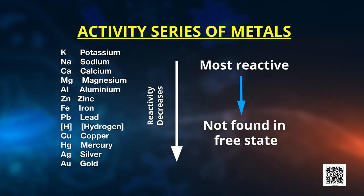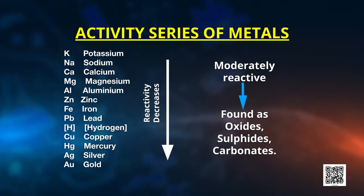But most metals do not occur in their free state. They are very reactive and unstable in their surroundings. They react with other elements to form compounds to attain stability. Copper and silver are also found in combined state as sulphide and oxide ores. The metals at the top of the activity series — potassium, sodium, calcium, magnesium and aluminium — are so reactive that they are never found in nature as free elements. Metals in the middle of the activity series — zinc, iron, lead — are moderately reactive. They are found in the earth's crust mainly as oxides, sulphides or carbonates.